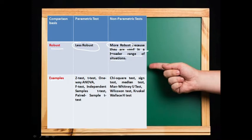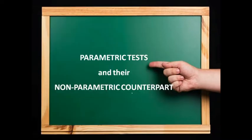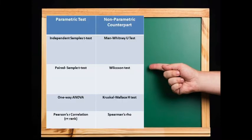Examples of parametric tests: Z test, T test, one-way ANOVA, F test, independent samples T test, paired samples T test. Examples of non-parametric tests: Chi-square test, Sign test, Median test, Mann-Whitney U test, Wilcoxon test, Kruskal-Wallis H test. Parametric tests and their non-parametric counterparts: Independent sample T test → Mann-Whitney U test; Paired sample T test → Wilcoxon test; One-way ANOVA → Kruskal-Wallis H test; Pearson's correlation → Spearman's rank correlation.